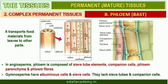Phloem transports food materials, usually from leaves to other parts of the plant. Phloem in angiosperms is composed of sieve tube elements, companion cells, phloem parenchyma, and phloem fibers. Gymnosperms have albuminous cells and sieve cells. They lack sieve tubes and companion cells.